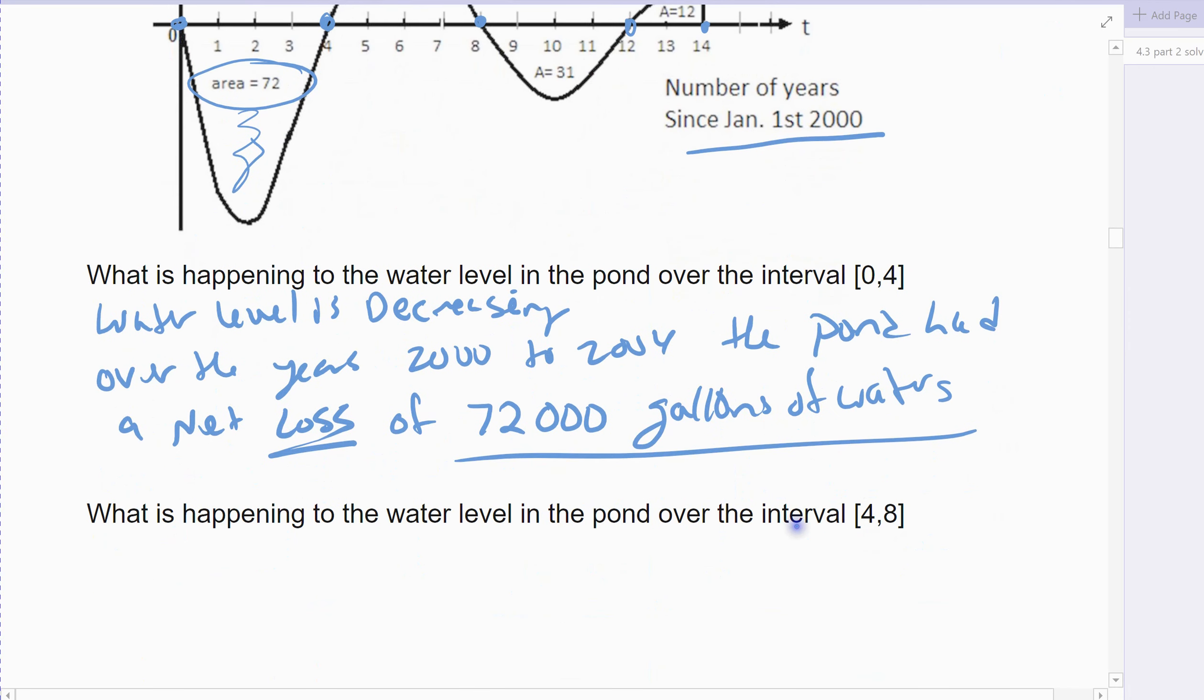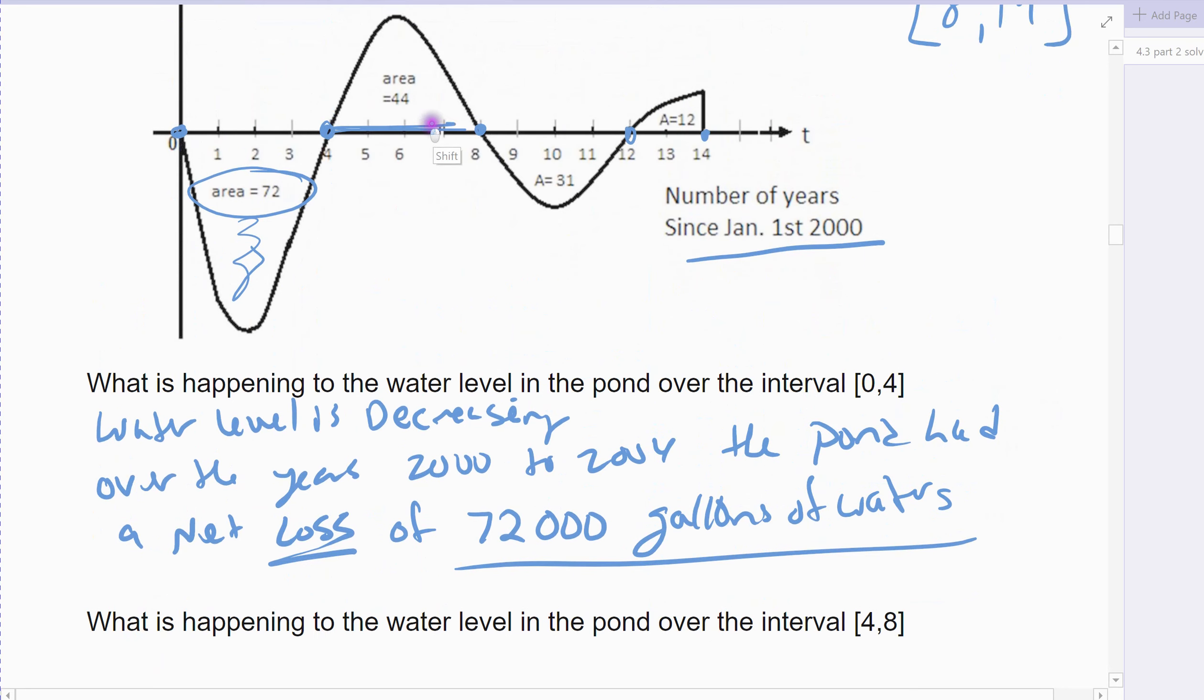What's happening in the pond between 4 and 8? So again, this would be the next piece from 4 to 8, that would be this piece. And so it was a rainy season over those four years. From 2004 to 2008, the pond was increasing every year.